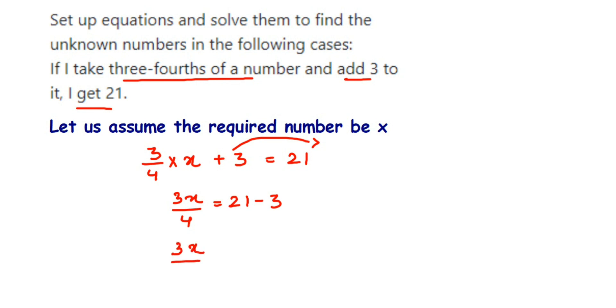Now I'll transpose 4 to the other side. 4 is a division, when transposed it comes in multiplication. So 3x will be equal to 18 multiplied by 4. You can multiply the answer or leave it like that because 3 is there.